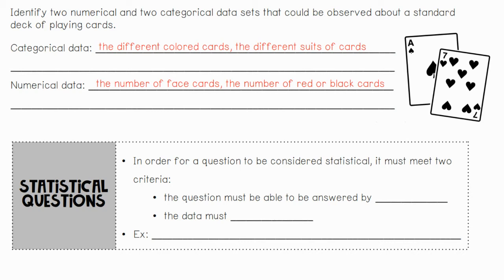Moving on to statistical questions — in order for a question to be considered statistical, it must meet two criteria: the question must be answerable by data, and that data must vary. For example, 'How many pets do students in sixth grade at Jackson MS have?' — that can vary because we don't know how many pets each student has, and it covers the entire sixth-grade population. So it has data, and that data will vary.